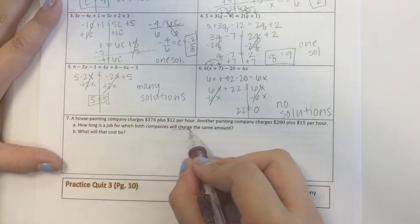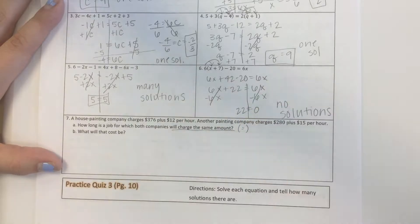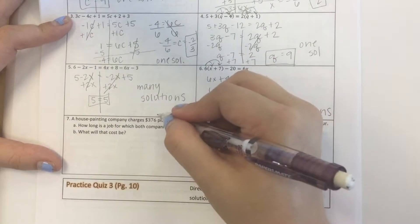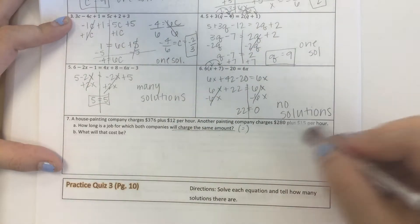So we can think of this, charge the same amount is when will they be equal? And then what will that cost be? So what we're going to do is we're going to write this as an equation, set it equal to this equation.